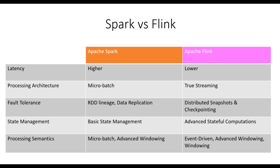State management is an essential aspect of stream processing frameworks, especially when dealing with stateful computation. Spark offers basic state management capabilities, while Flink provides advanced stateful computations. Flink's advanced state management allows for complex computations that require maintaining and updating states across multiple events, making it suitable for applications that rely heavily on stateful processing.